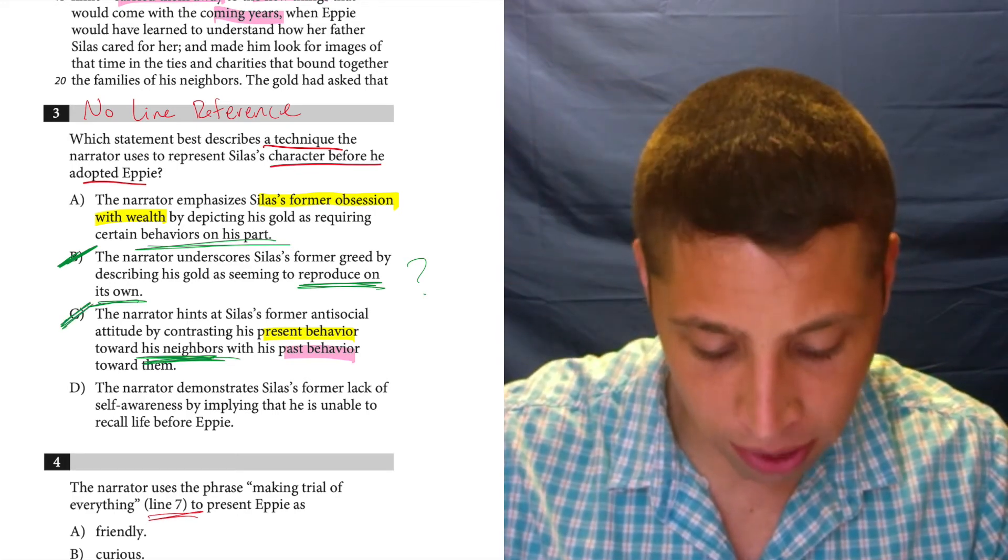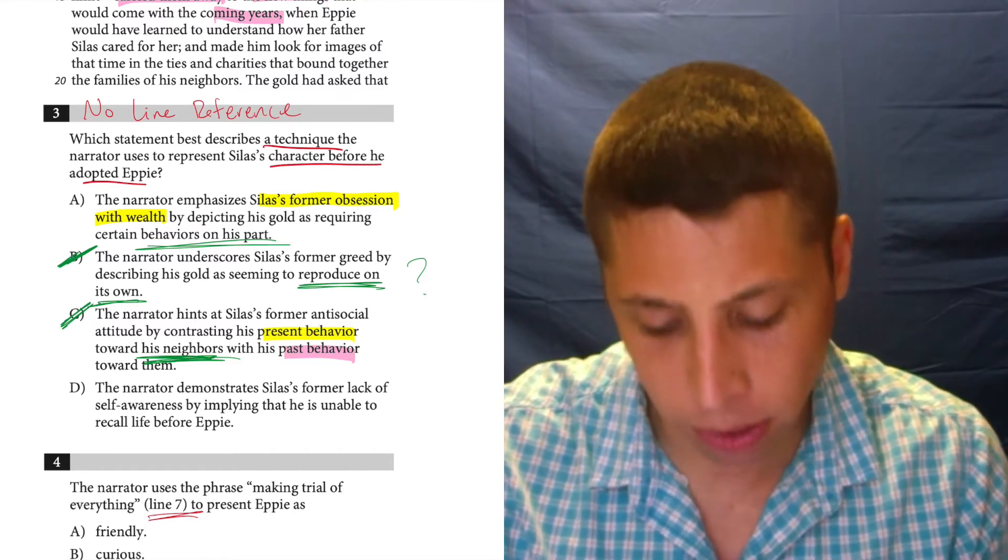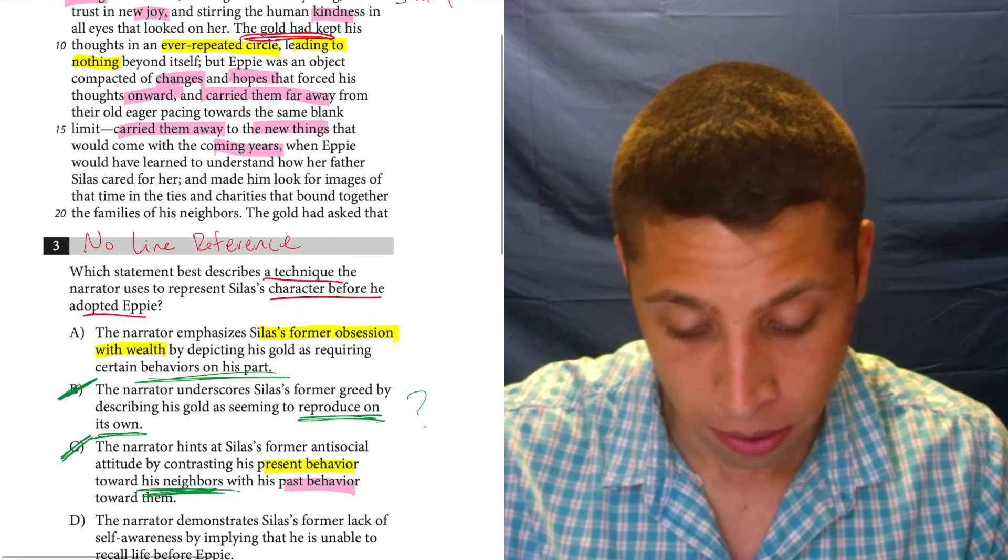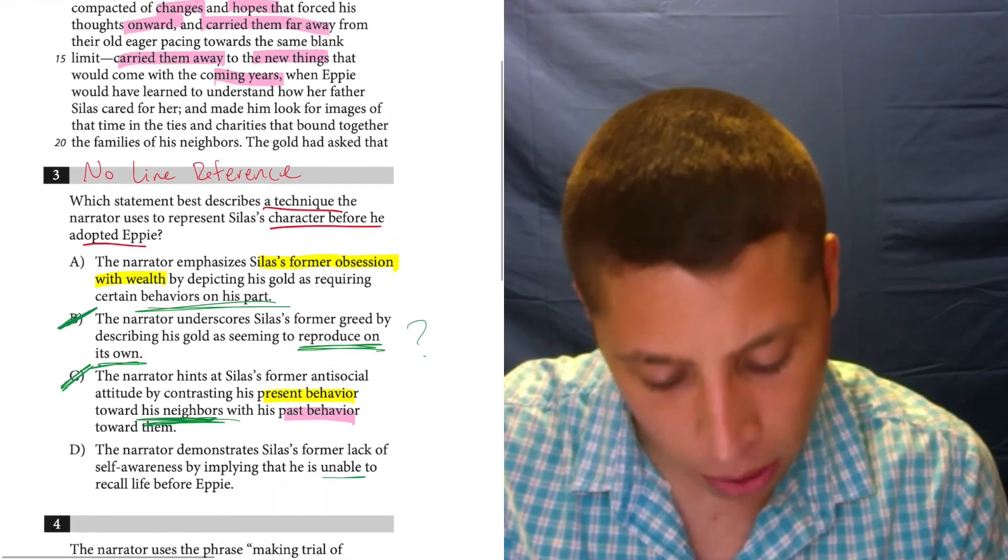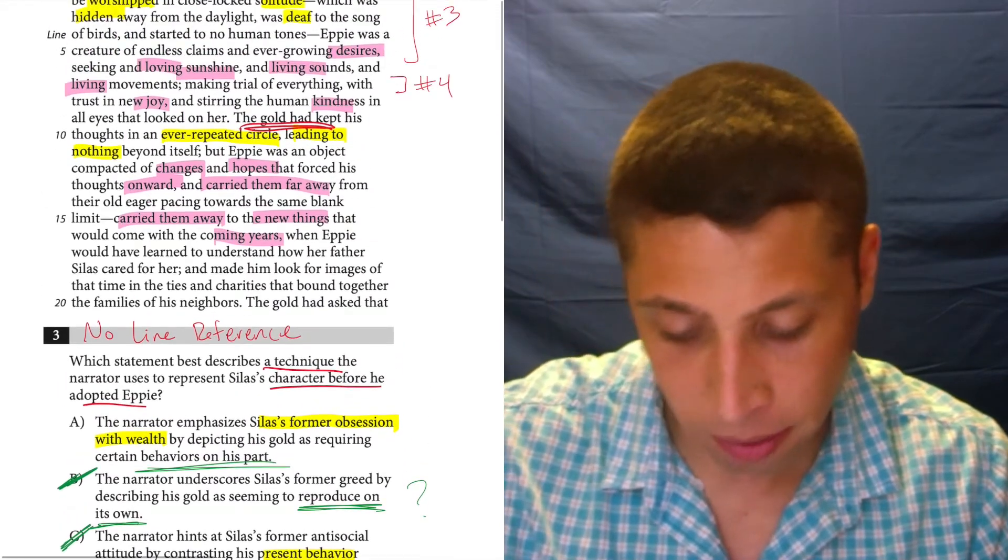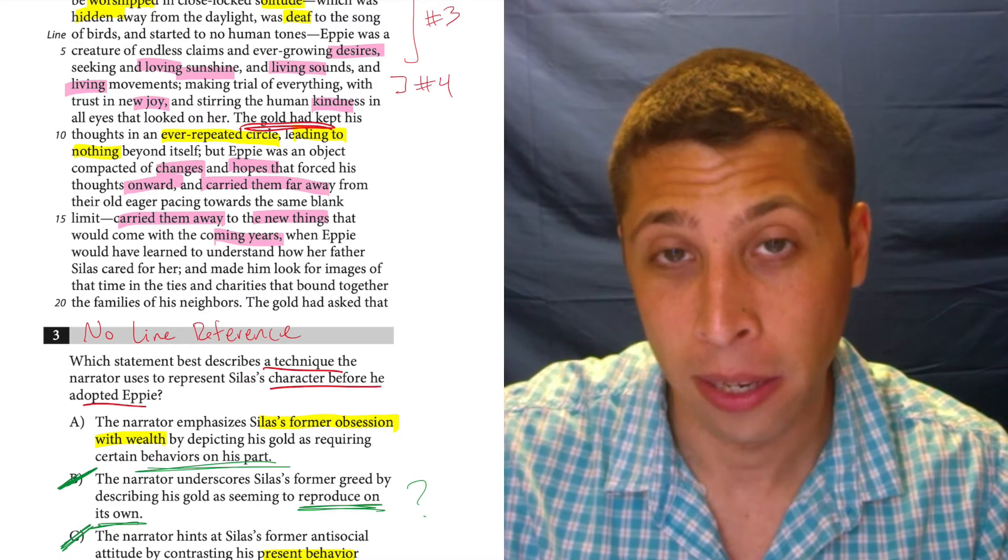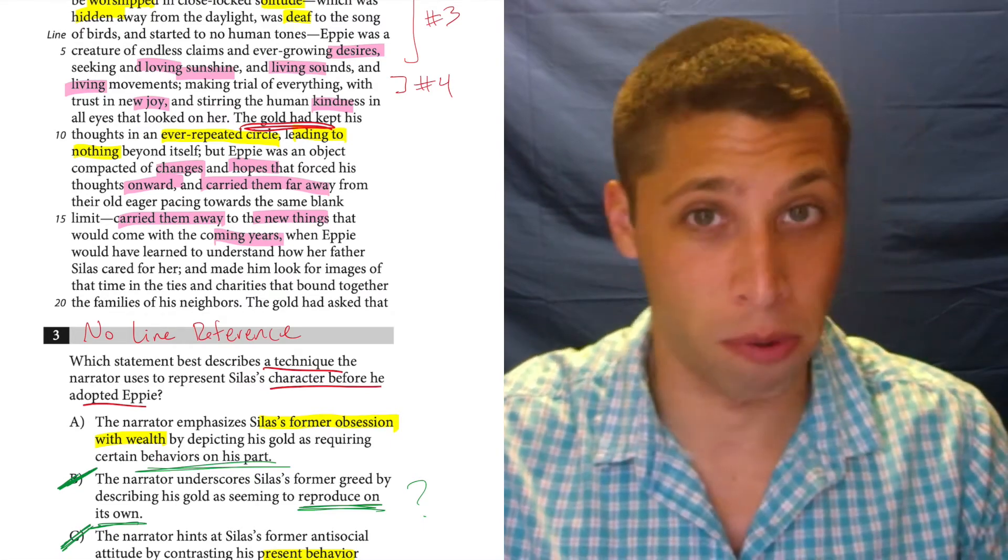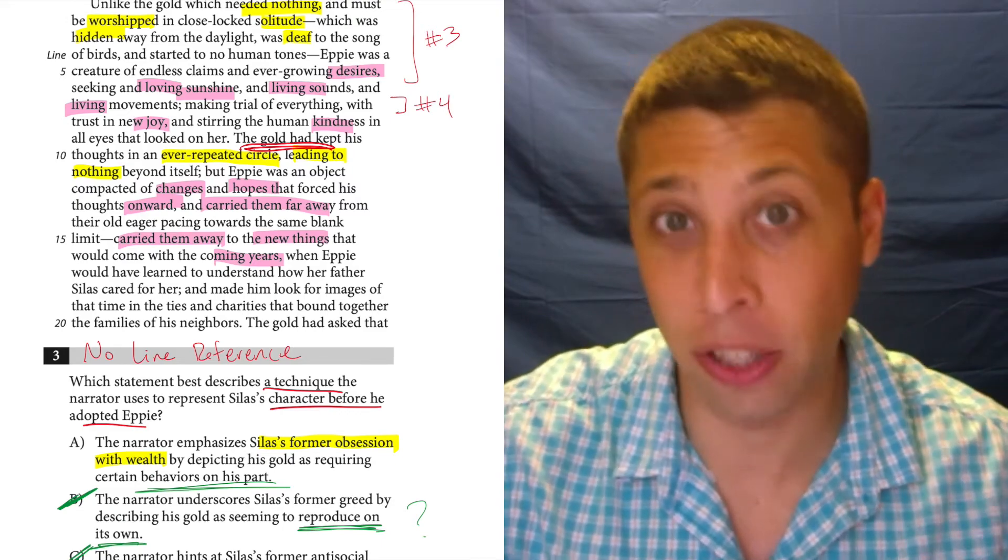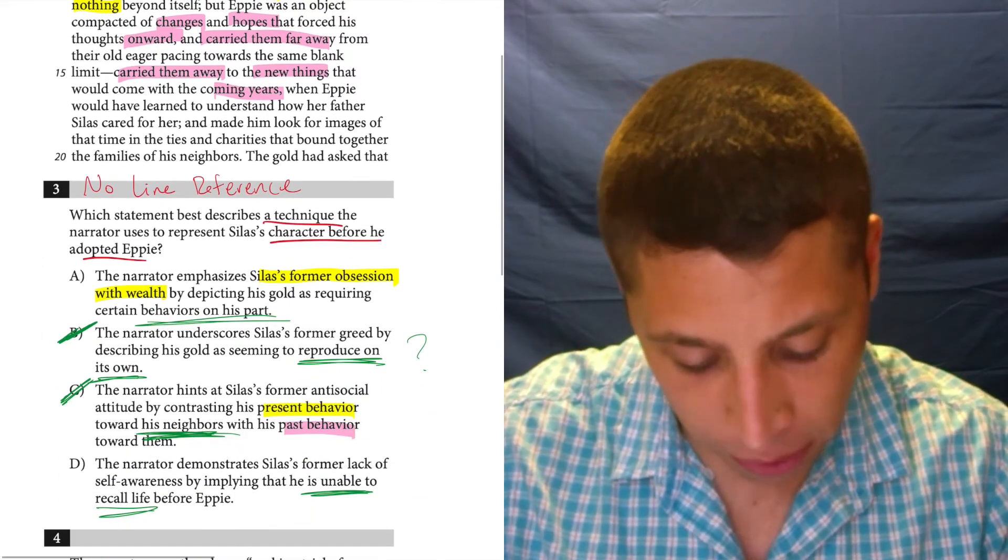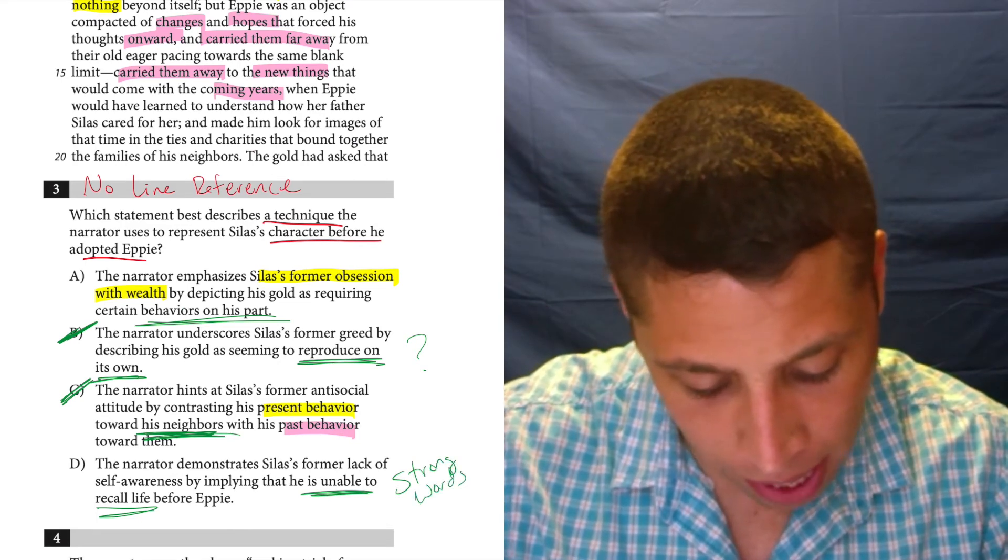D, the narrator demonstrates Silas's former lack of self-awareness by implying that he is unable to recall life before Epi. Well, no, it doesn't say he's unable to recall it. I mean, it's contrasting his life before her and his life since her, but it doesn't say that he doesn't remember the former life. I mean, the fact that it even talks about it seems to suggest that he is aware of the change.